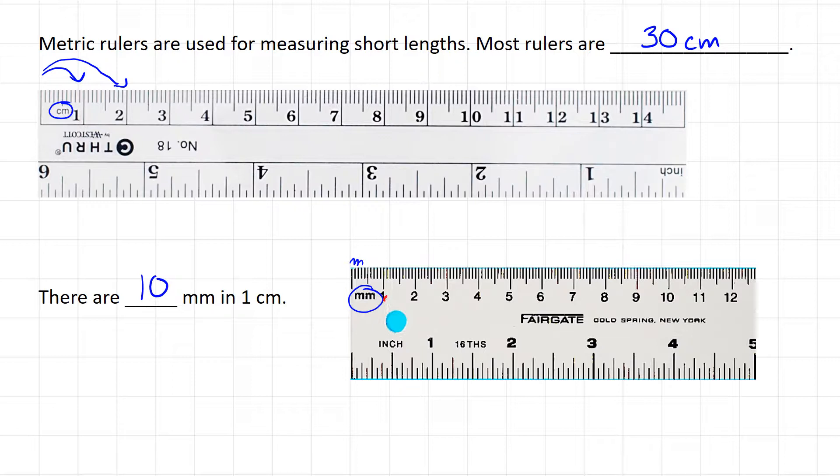So on this ruler, this is still the one centimeter mark, but it means that we've gone through 10 millimeters. Down here on the ruler, this is six centimeters or 60 millimeters.